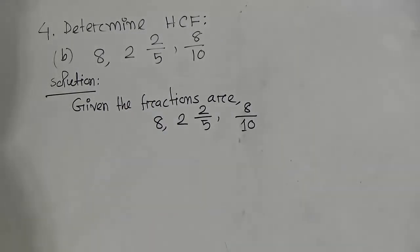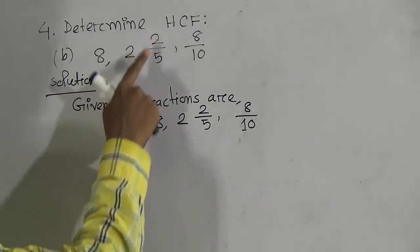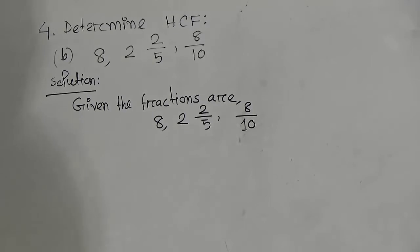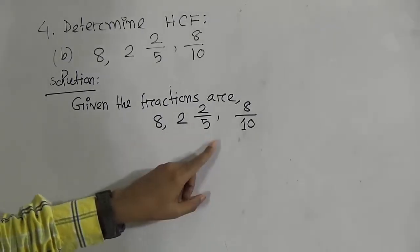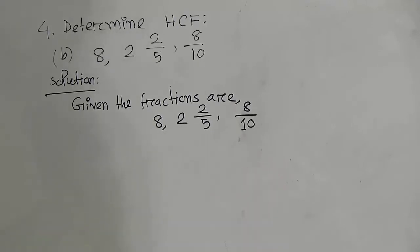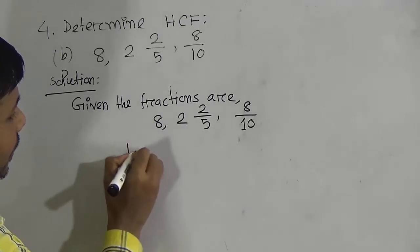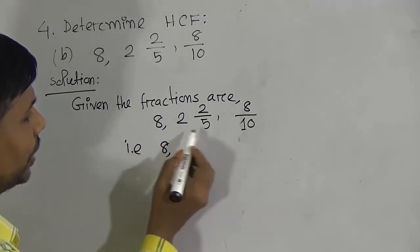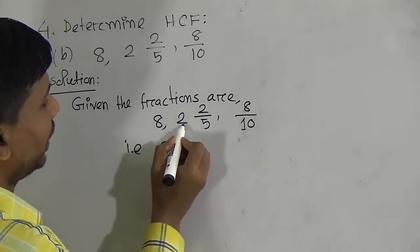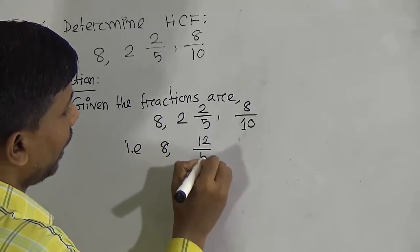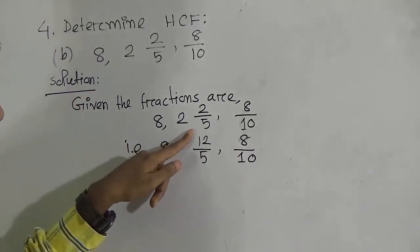Remember, all the questions are similar — only the digits are different, the rules are the same. Now, question 4B: determine the HCF of 8, 2 and 2/5, and 8/10. First, we have to convert the mixed fraction into an improper fraction. So 2 and 2/5 becomes: 5 × 2 + 2 = 12, giving us 12/5. Then we have 8/10.